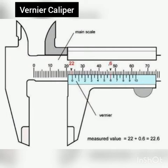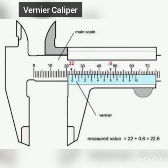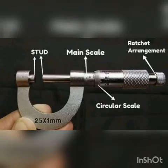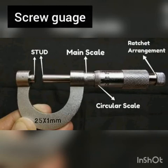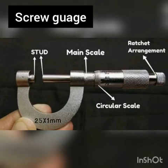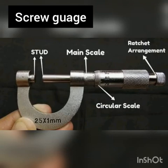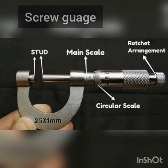The screw gauge is an instrument used for measuring accurately the diameter of a thin wire or the thickness of a sheet of metal. It consists of a U-shaped frame fitted with a screwed handle which is attached to a spindle. The screw gauge is widely used for accurate measurement of components in mechanical engineering, along with other metrological instruments such as dial, vernier, and digital calipers.